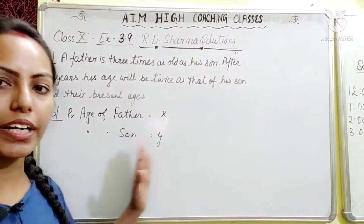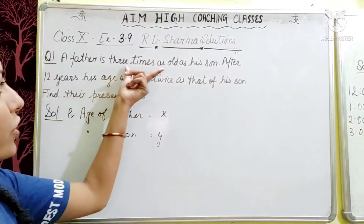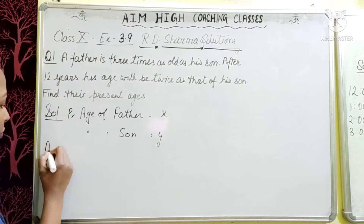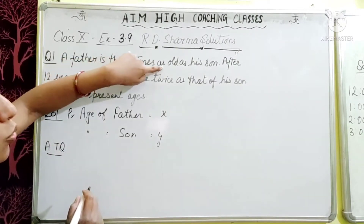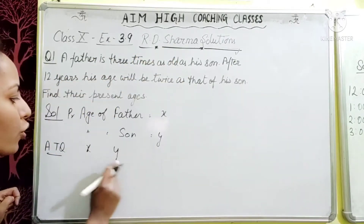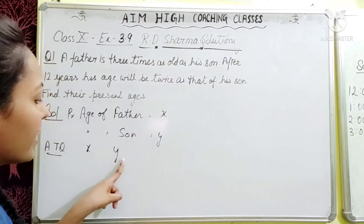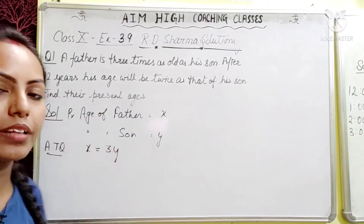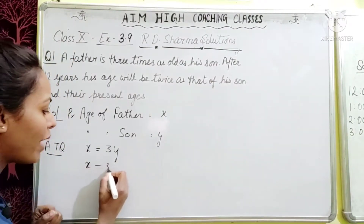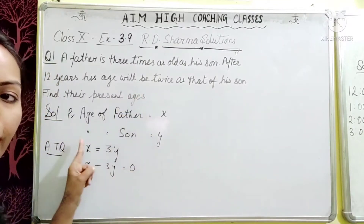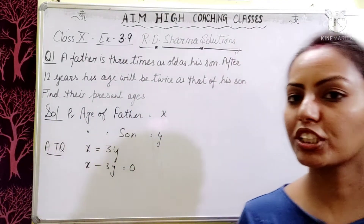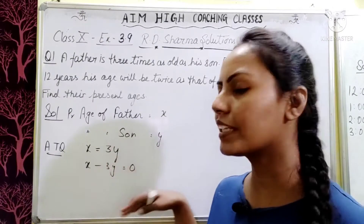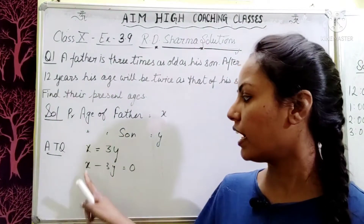You will remember the pattern we use for these questions: we will form one equation for the current condition and one for 12 years later, on the side. The question says father is three times as old as his son, meaning if you multiply son's age by 3, you get father's age. This gives us the equation x = 3y, which rearranges to x − 3y = 0 as our first equation.